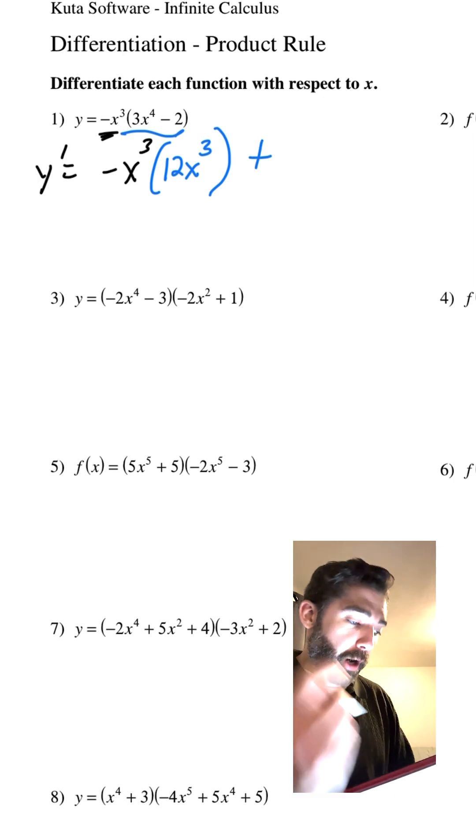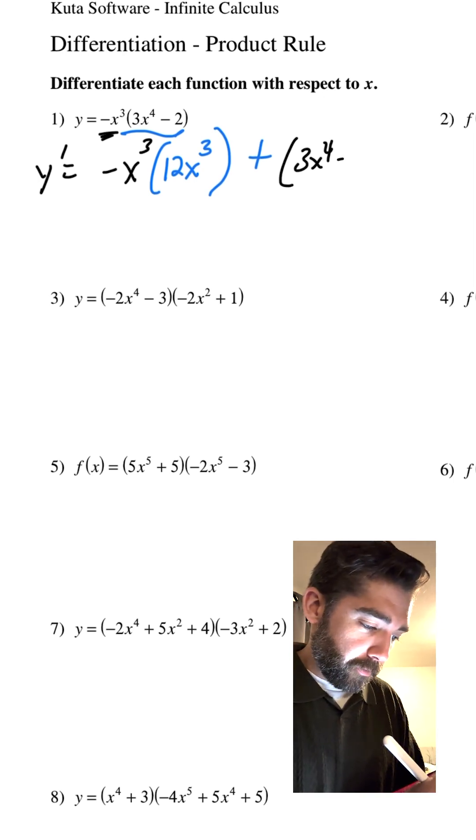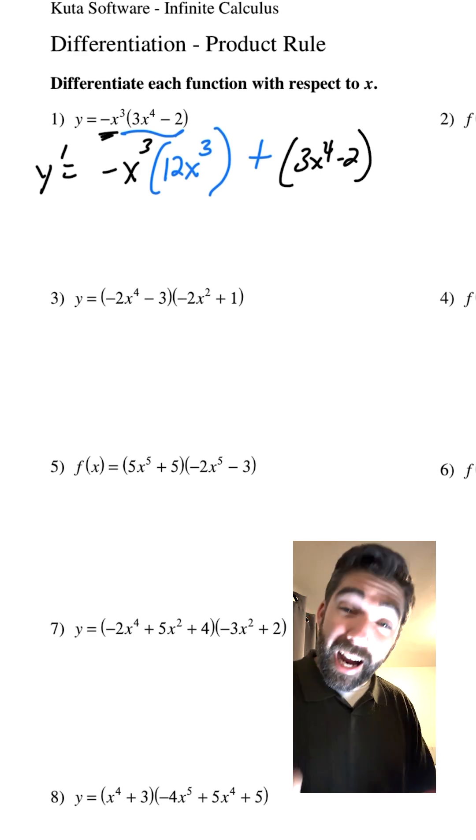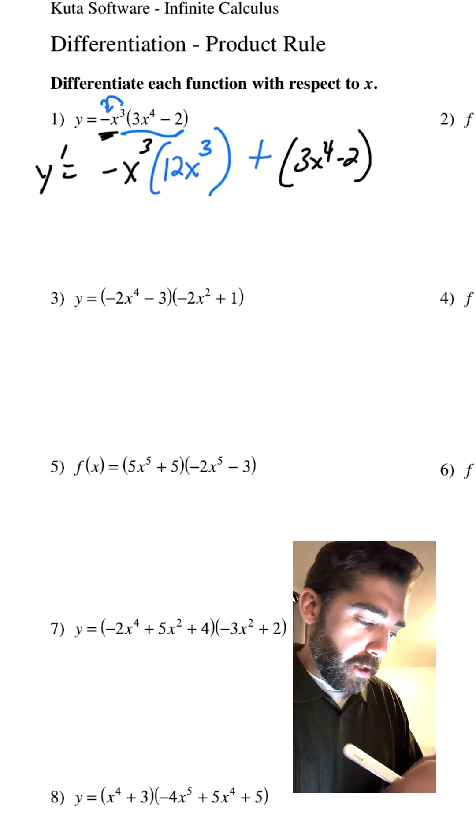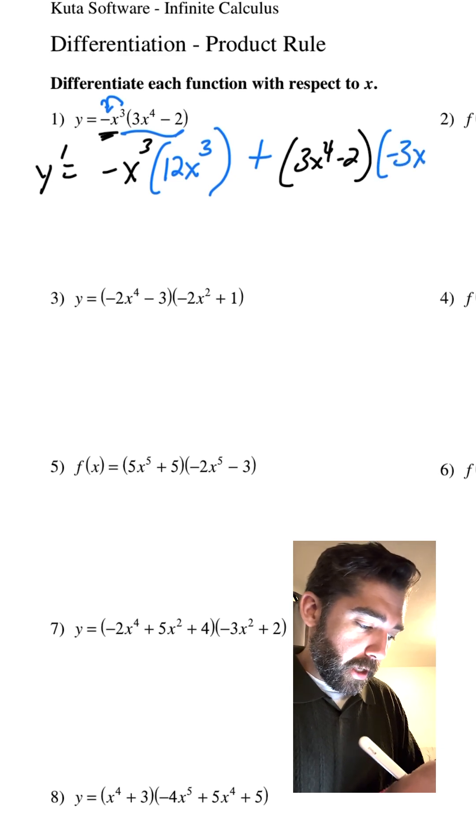Plus the right, so leaving that alone, 3x to the 4th minus 2, times the derivative of the left. Well, the derivative of the left, we move the 3, we get negative 3x squared.